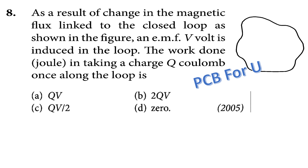As a result of change in magnetic flux linked to the closed loop, as shown in the figure, an EMF of V volts is induced in the loop. What is the work done in joules in taking the charge q coulombs once along the loop?